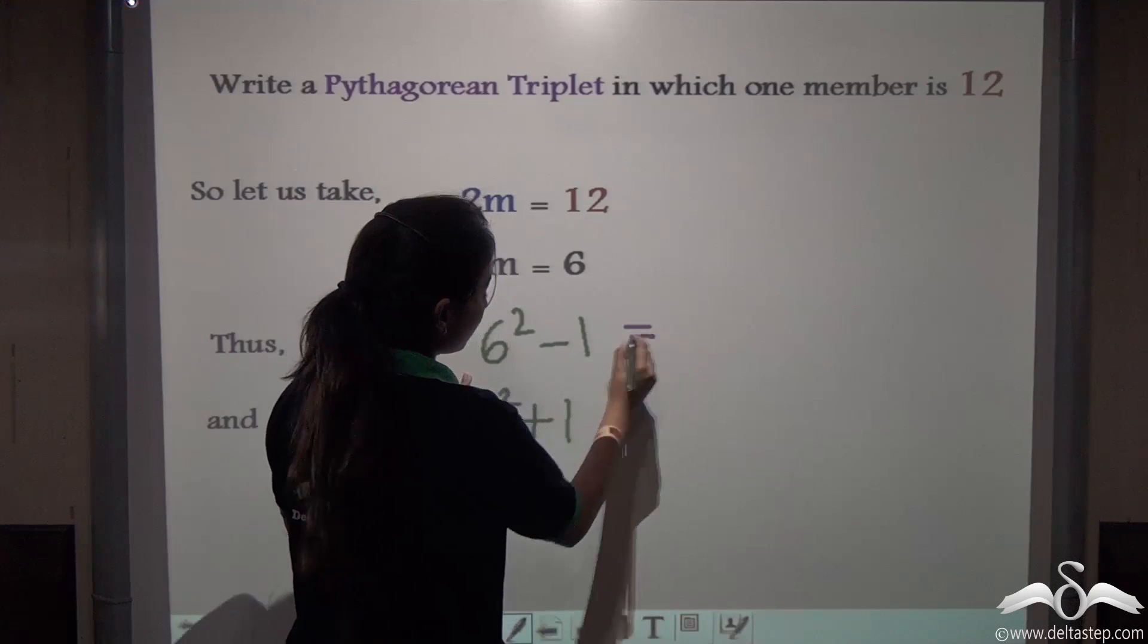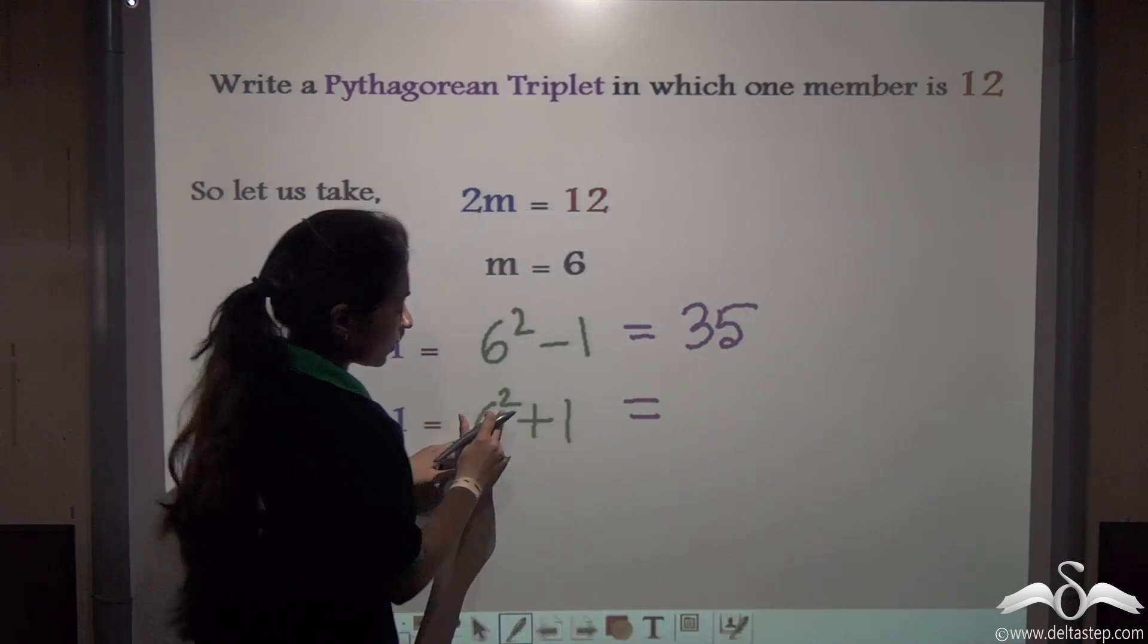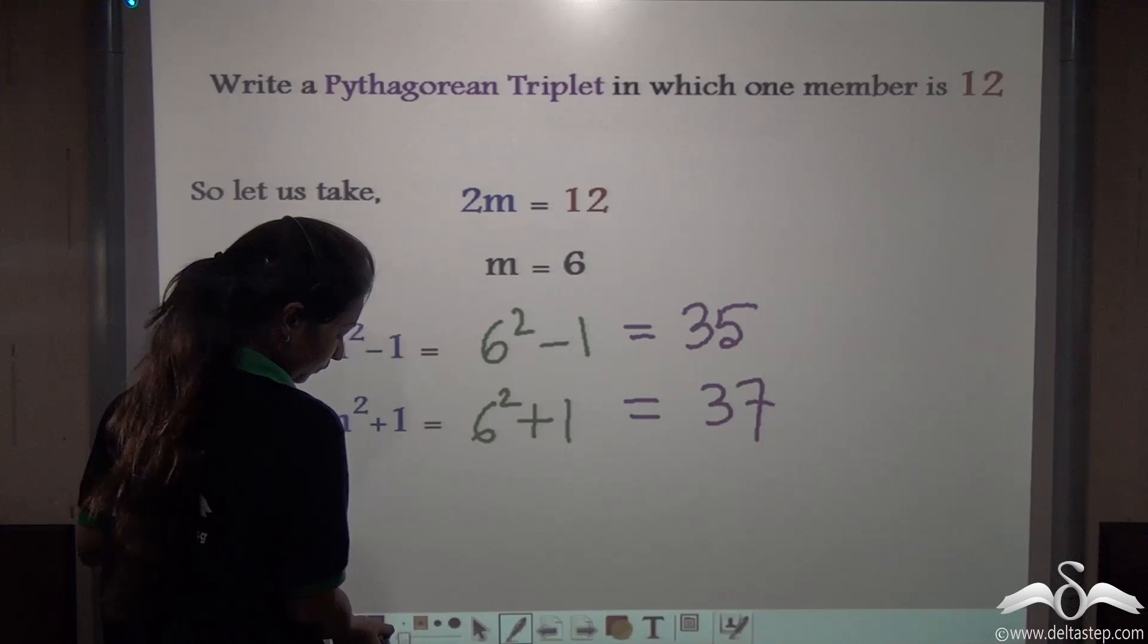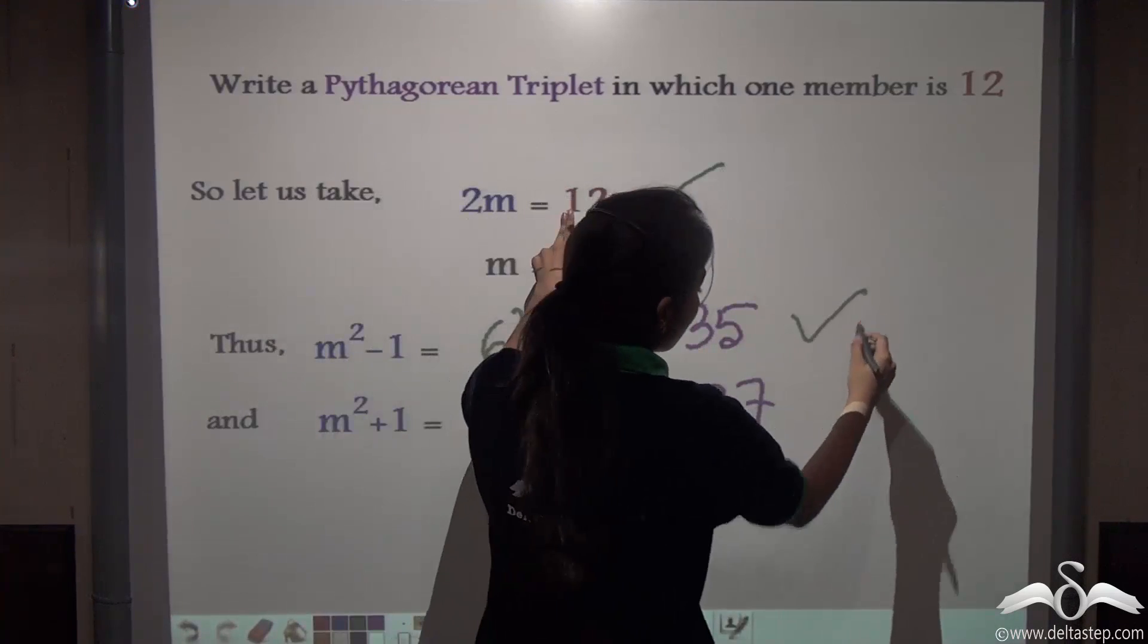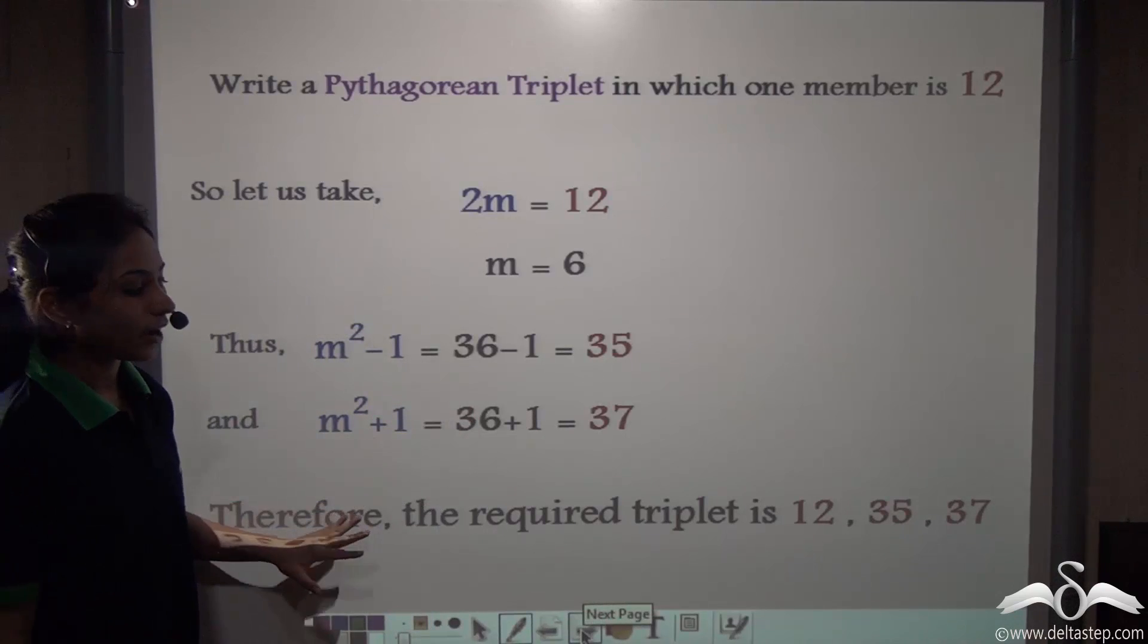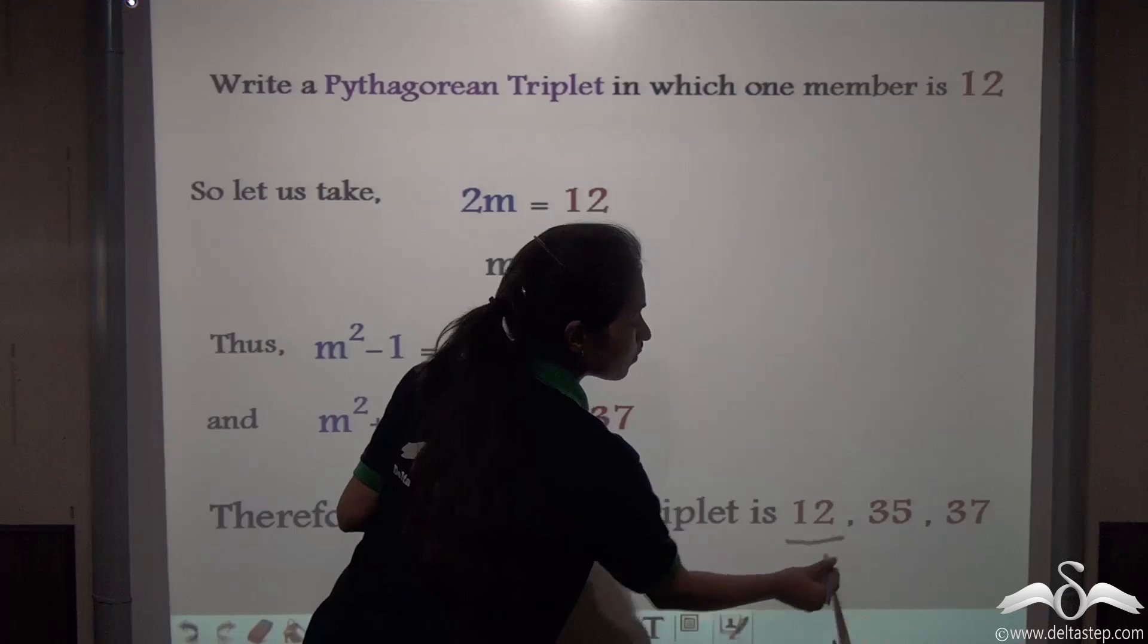Solving this we get 6 squared, 36 minus 1, which is 35. And 6 squared, 36 plus 1, which is 37. So what do you see? One member had to be 12 and the other members are 35 and 37. So the required triplet is 12, 35, and 37 where 12 is the smallest member.